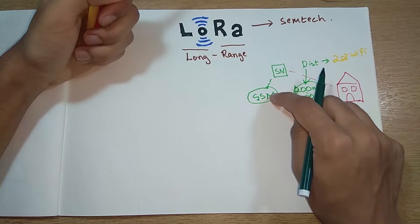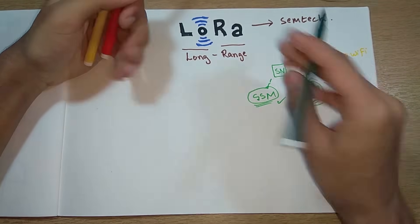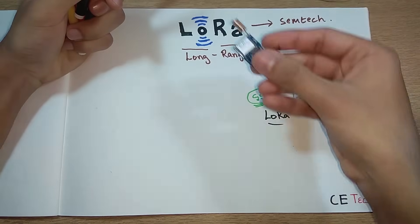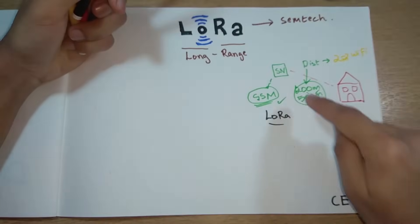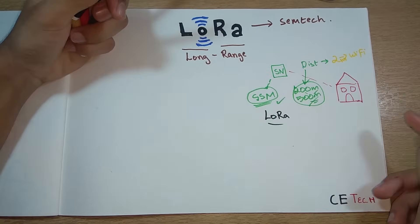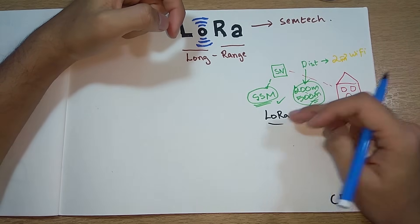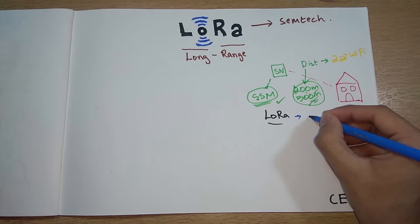This will work for 200, 500, or any distance for that matter because GSM, wherever you have network coverage it will work. So an alternative to GSM comes in LoRa. There are modules available like this for LoRa.